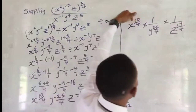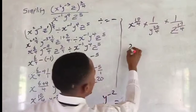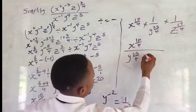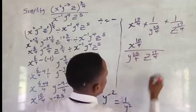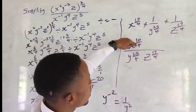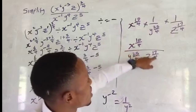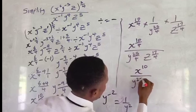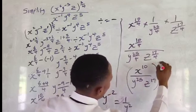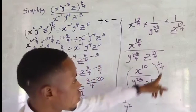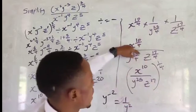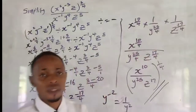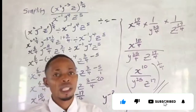So we have s raised to 10 over 4, over y raised to 25 over 4 times z raised to 17 over 4. Now notice that 4 is common in all denominators of the exponents, so we can factor out the 1 over 4. The final answer is: the quantity s raised to 10, over y raised to 25 times z raised to 17, all raised to the power 1 over 4. That is our answer. Please subscribe, like, and turn on the notification button. God bless you.